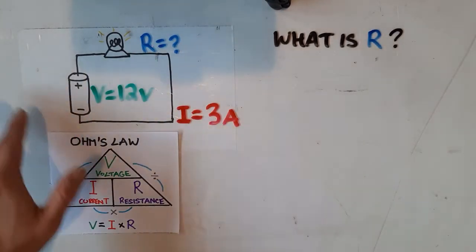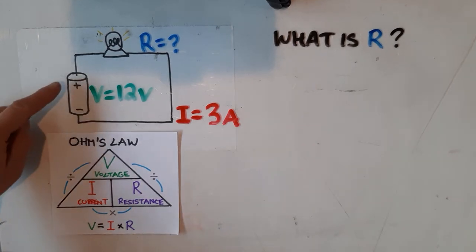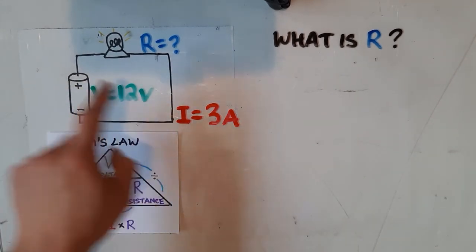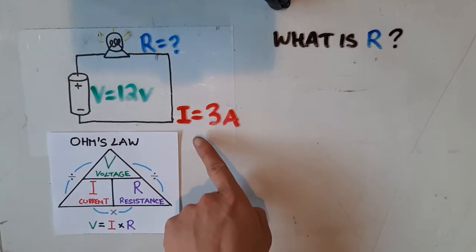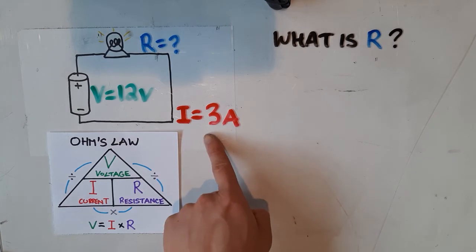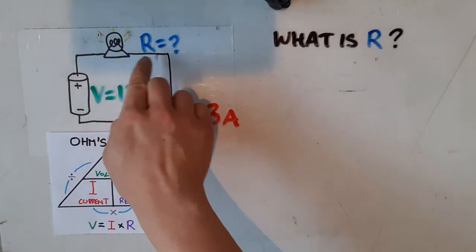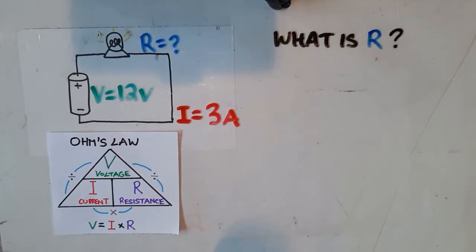At this point, I've kept the same circuit, but I've changed some of the values. This time, we know that we have a battery, and this battery is supplying 12 volts of electrical pressure through the circuit. We also know that within the circuit, there is 3 amps of current flowing through it, but what we don't know is the resistance that this light bulb offers. So we're going to go ahead and solve for R.